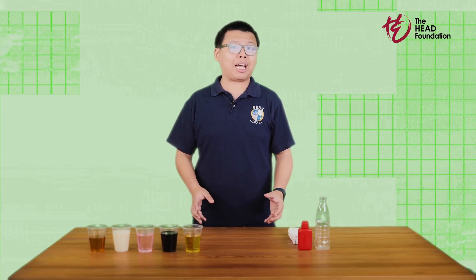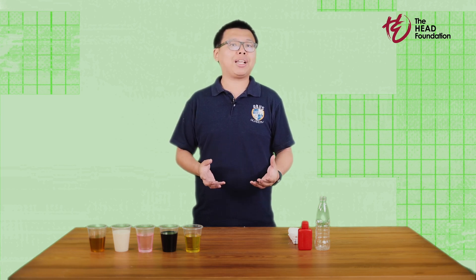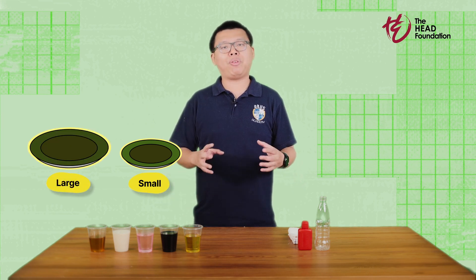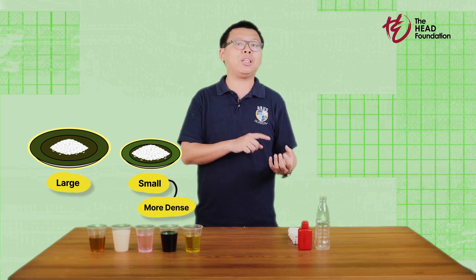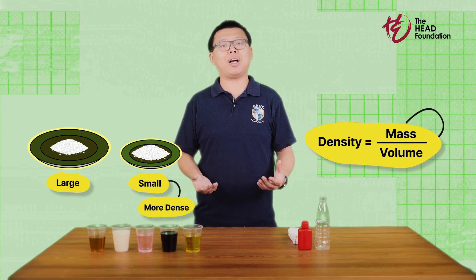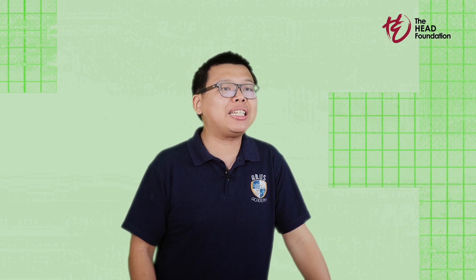But what exactly is density? Density is how much stuff — or mass — is packed into a certain amount of space, or volume. For example, imagine two plates, one smaller and one larger, both with equal amounts of rice. The smaller plate is said to be more dense because the rice is packed into a smaller space. In short, density equals mass divided by volume. We see density in action everywhere, like in three-layered tea or ice floating in drinks.